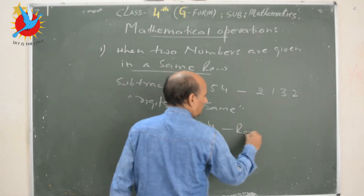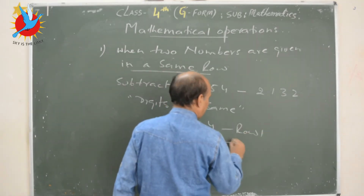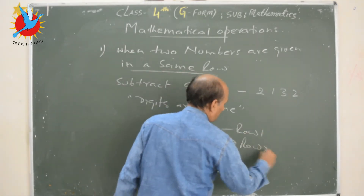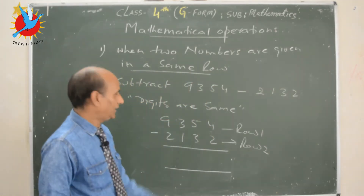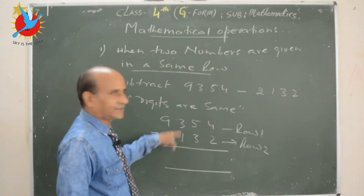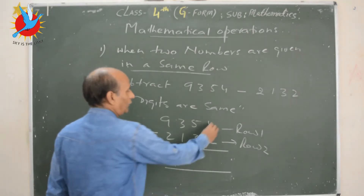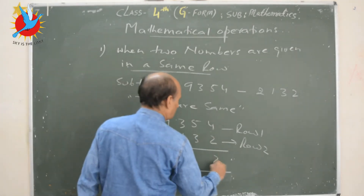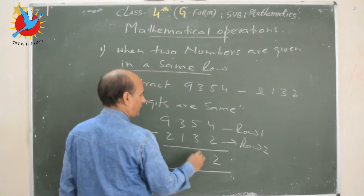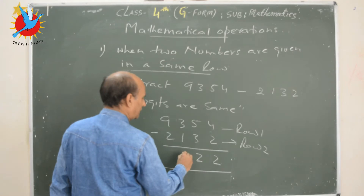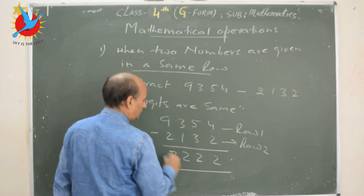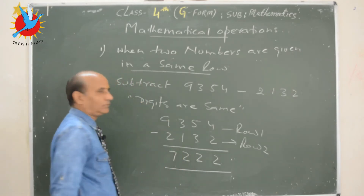This becomes row one and this becomes row two. Subtract column wise: 4 minus 2, 5 minus 3, 3 minus 1, and 9 minus 2 equals 7.